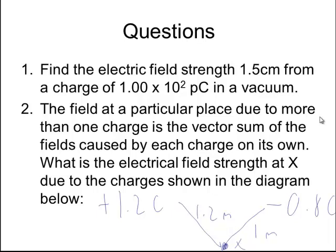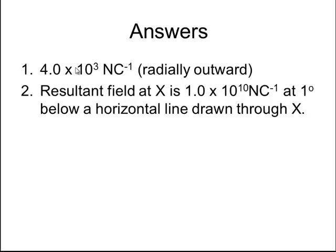So the answers we're going to have here are 4.0 times 10 to the 3 newtons per coulomb, radially outwards. And for the second question, the resultant field at X is 1.0 times 10 to the 10 newtons per coulomb at 1 degree below a horizontal line drawn through X. So you've got to remember that there's a direction there as well. I hope you'll be able to use these to understand any problems in the future on electric fields.